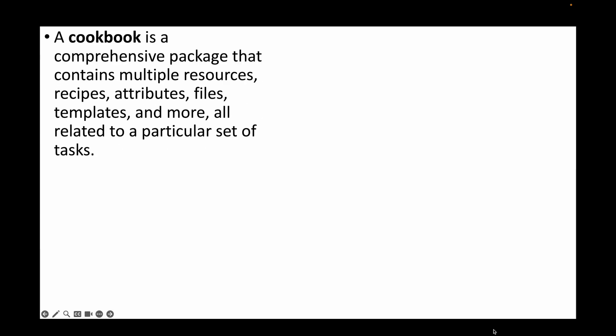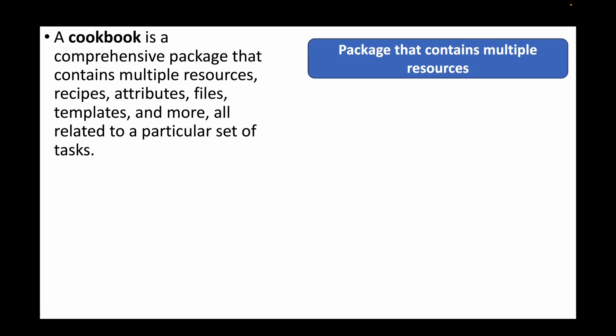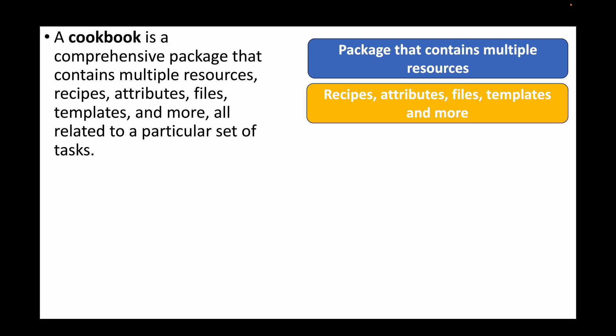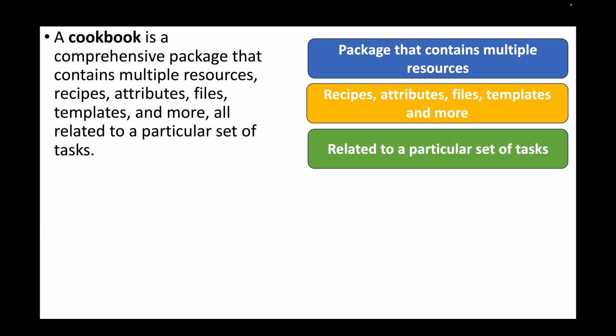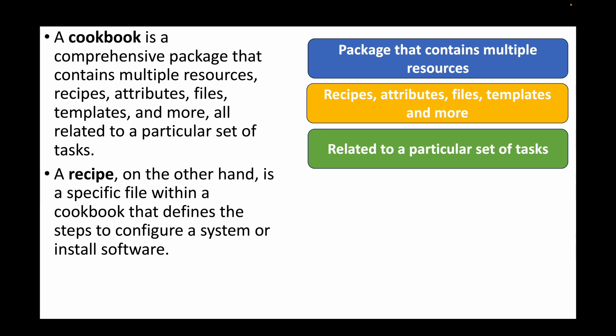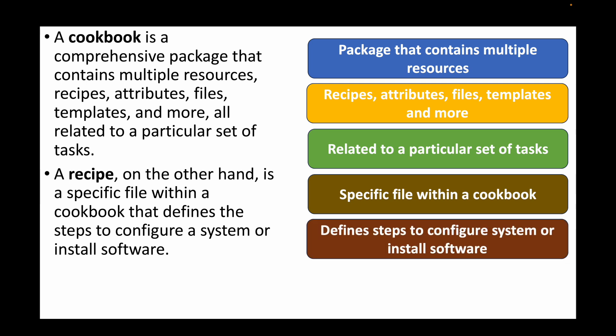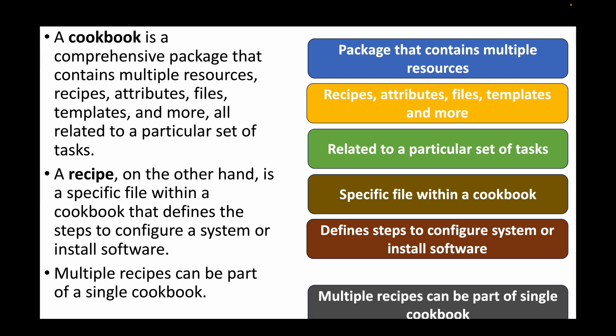The next question is: what is the difference between a cookbook and a recipe? A cookbook is the complete, comprehensive package containing multiple resources, recipes, attributes, files, templates, and more — all related to a particular set of tasks. A recipe is an individual or specific task defined within the cookbook — a single step to configure a machine or install software, like installing Apache, Tomcat, or Docker. A cookbook is a collection of multiple recipes.